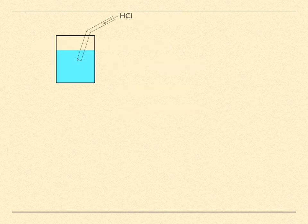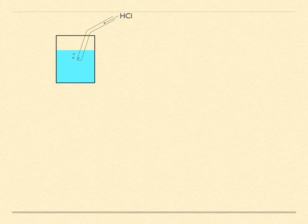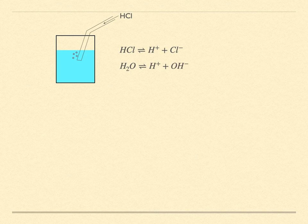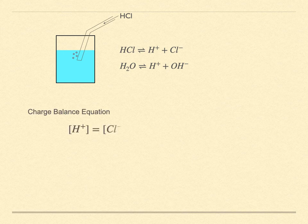Some examples. If you bubble some HCl gas through water, you end up with a solution of hydrochloric acid. The HCl will dissociate in water. Don't forget the water itself will self-dissociate. The charge balance equation is H+ equals OH- plus chloride.